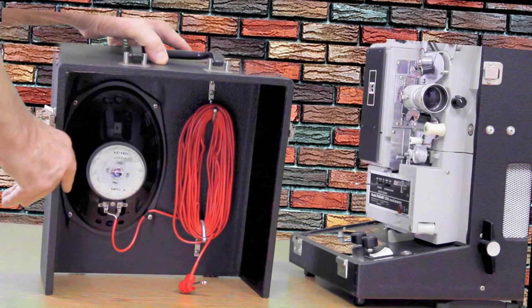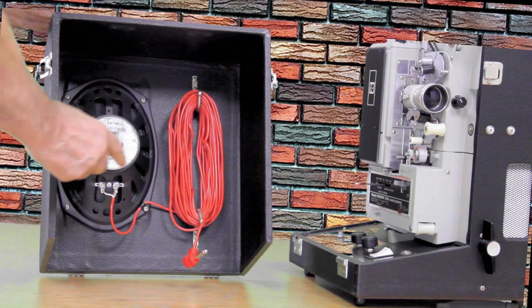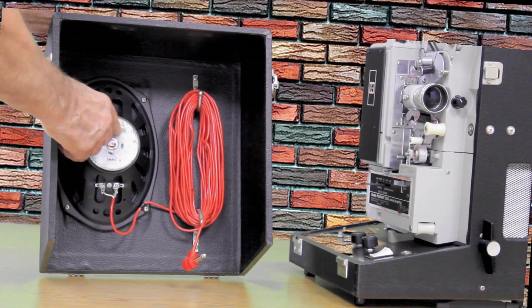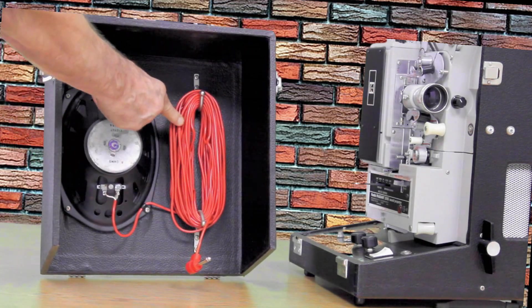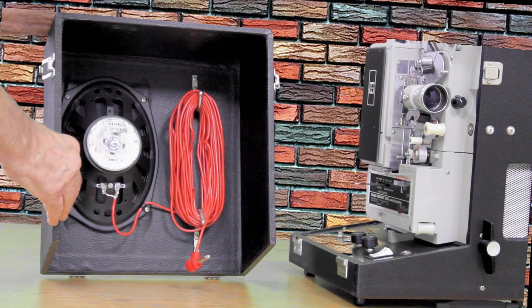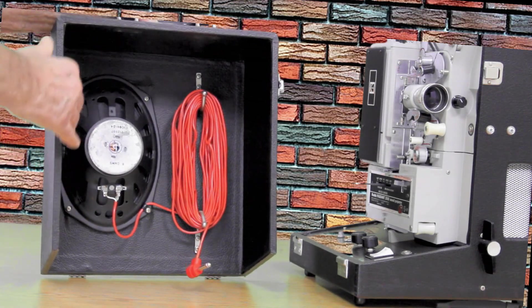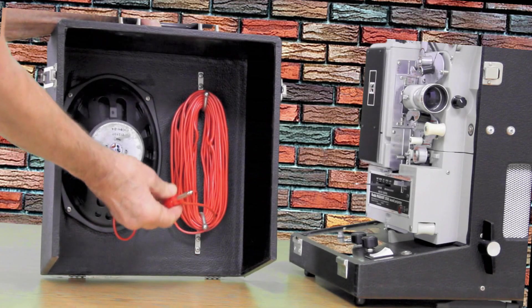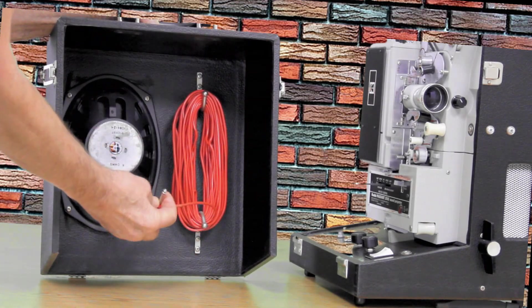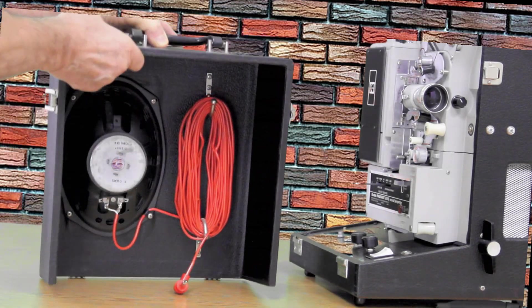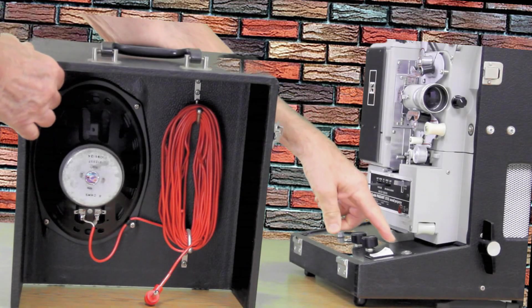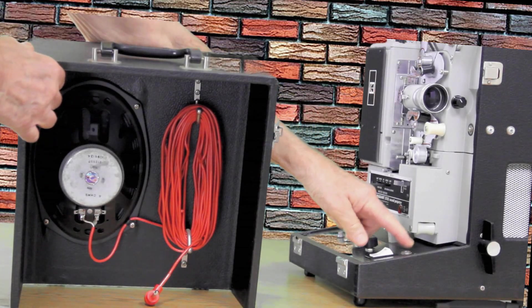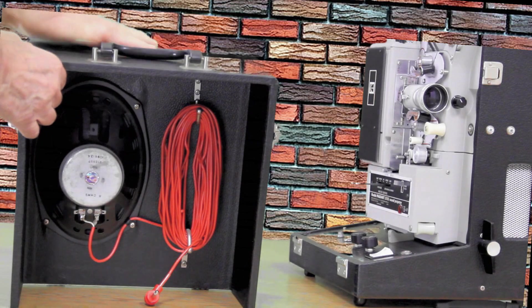This is a closer view of the speaker nestled in the cabinet, and the speaker wire that you can unwind and set quite a ways away in the room. This appears to be an RCA jack, and on the projector is where you plug it in.